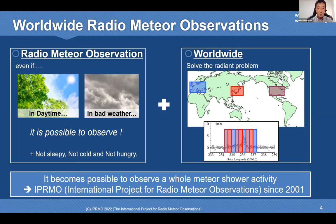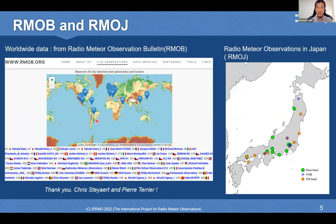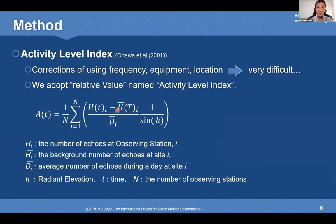Worldwide data were provided by radio meteor observers. British and Japanese data were provided by an original network in Japan, organized by myself in 2000. When collecting worldwide data, it is very difficult to account for differences in frequency, equipment, and location at each site.